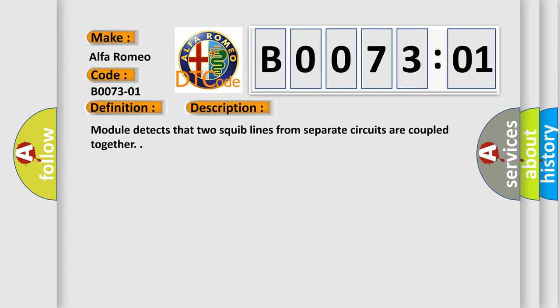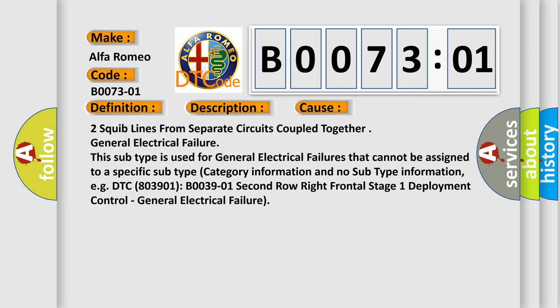Module detects that two squib lines from separate circuits are coupled together. This diagnostic error occurs most often in these cases: two squib lines from separate circuits coupled together, general electrical failure.